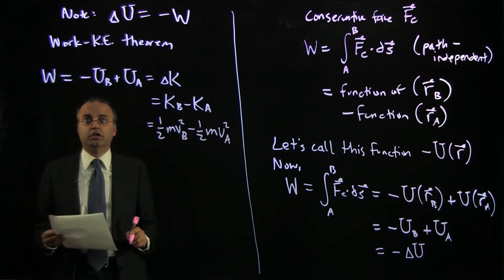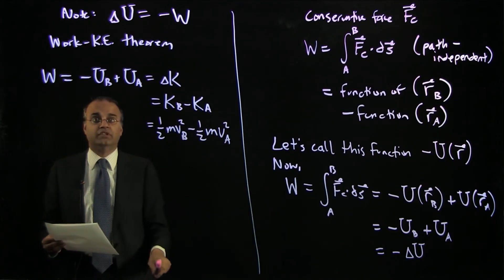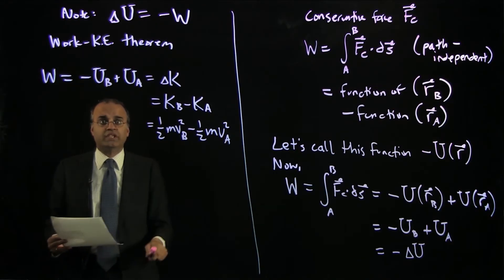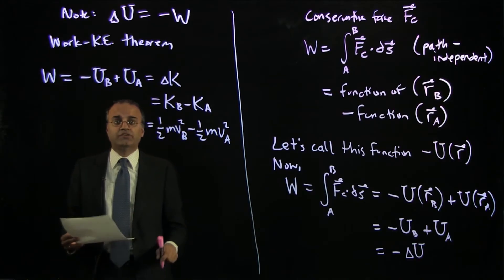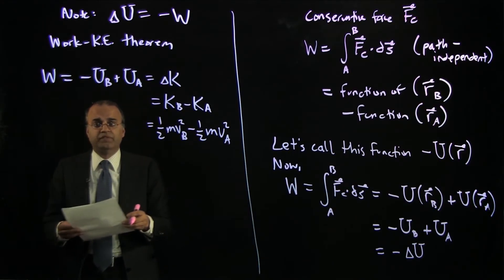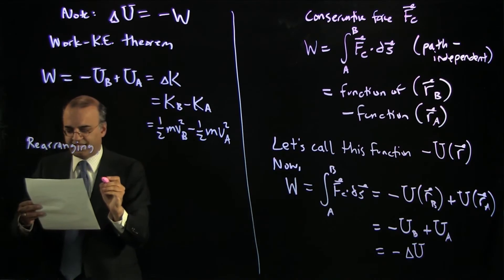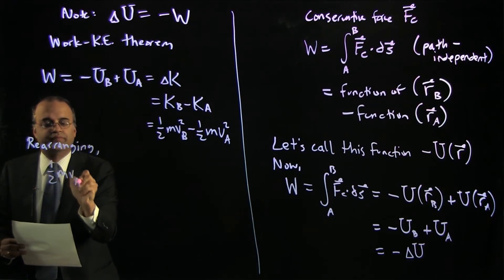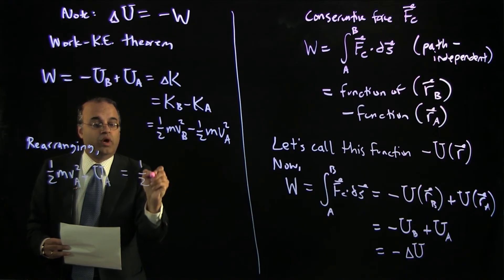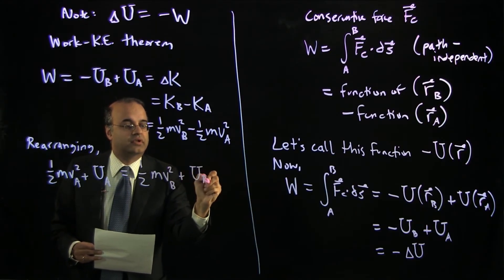This is just restating that the work done on the system equals the change in kinetic energy, and I can write the work in terms of my function u: minus u sub B plus u sub A. Rearranging, so that all terms involving point A are on one side and all terms involving point B are on the other side, I get that one-half m v_A squared plus u sub A equals one-half m v_B squared plus u sub B.